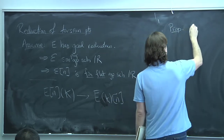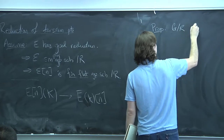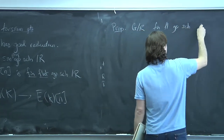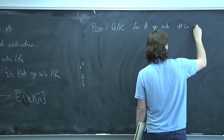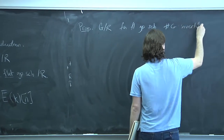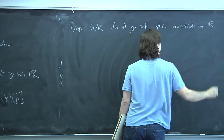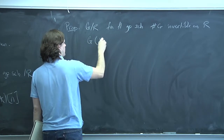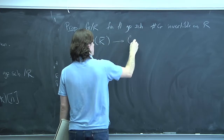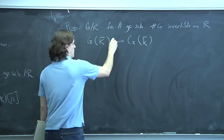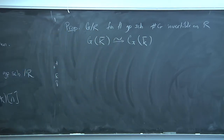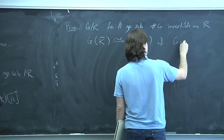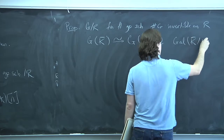Proposition: Suppose G is a finite flat group scheme and the order of G is invertible on R. Then the map from the K-bar points of G down to the little k-bar points of G is an isomorphism — and it's an isomorphism of Galois modules, for Gal(K-bar/K) and Gal(k-bar/k).